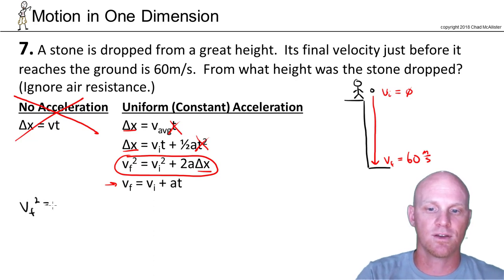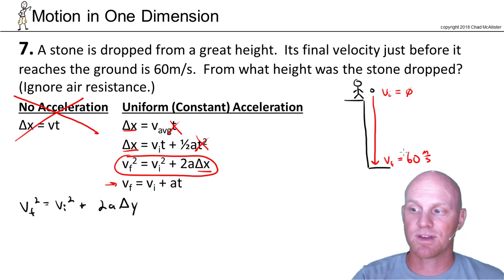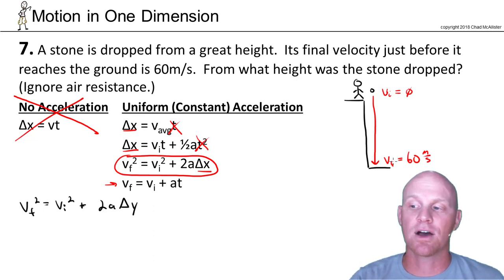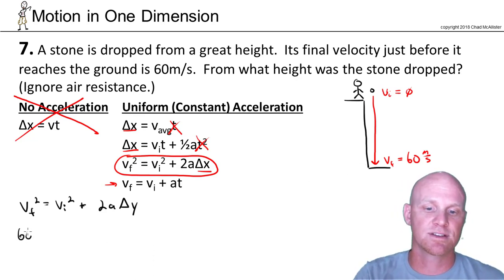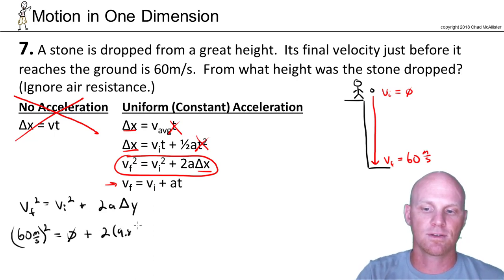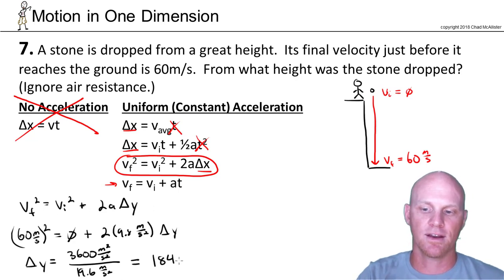So: v_f² = v_i² + 2a·δy. The final velocity is 60 m/s — it's technically negative since it points downward, but displacement, velocity, and acceleration all point down, so we can make them all positive. This gives 60² = 0 + 2 × 9.8 × δy, so 3600 = 19.6 × δy. Solving, δy = 3600 / 19.6, which rounds up to 184 meters.